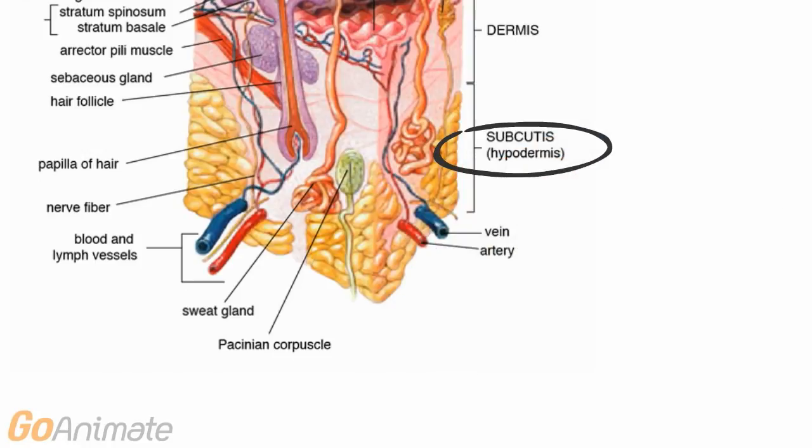Let's look at the hypodermis in more detail. The hypodermis consists of connective tissue and adipose tissue, along with blood vessels and nerves.